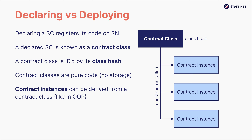Contract instances can be derived from contract classes, much like in object-oriented programming instances can be derived from classes. When deploying a contract instance — or what we normally refer to as a smart contract — the protocol will invoke the constructor function of the contract class.